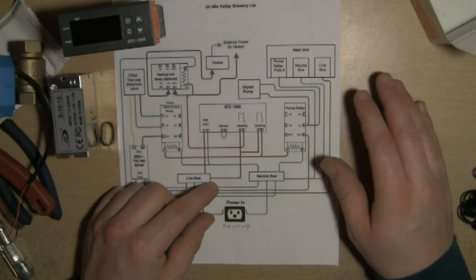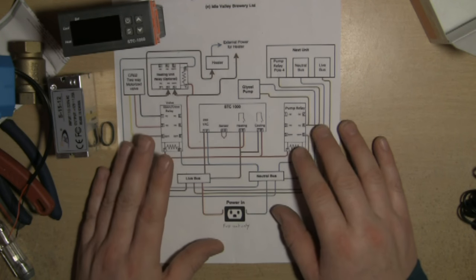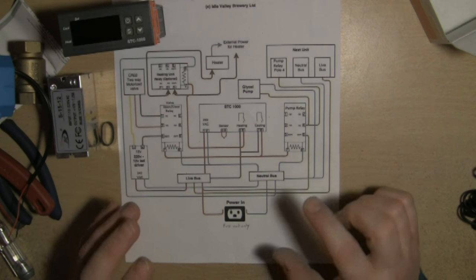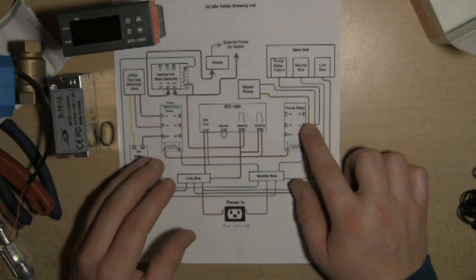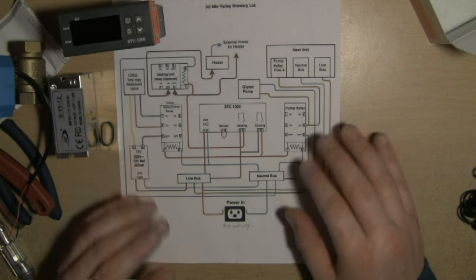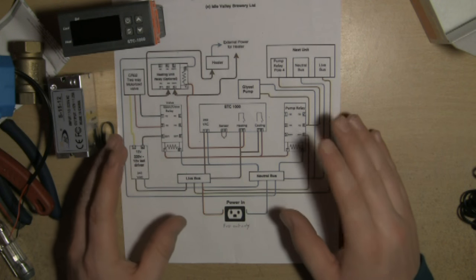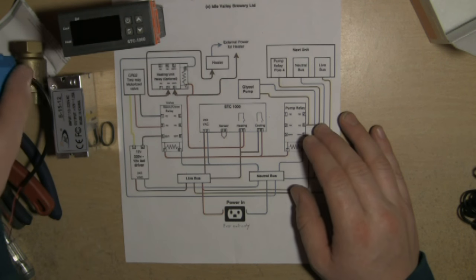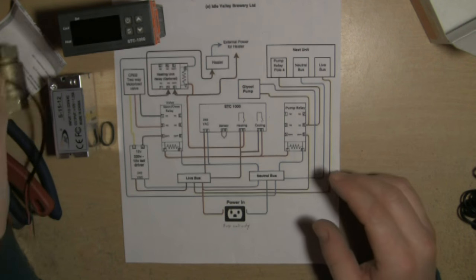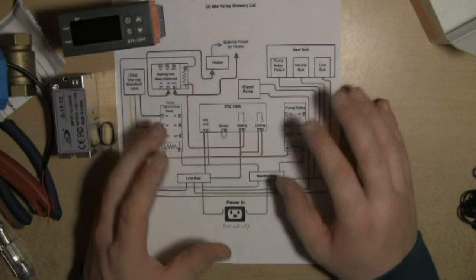If one of them activates, the glycol pump will turn on. If all nine of them activate, it makes no difference—the glycol pump is still on. Then if one of them turns off, the only difference is the valve will close and the glycol can't get to that particular fermenter.